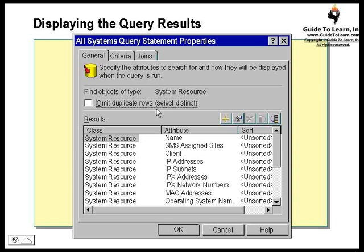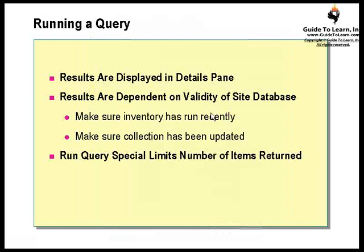To run a query, simply right-click on it and select Run Query. All results are displayed in the details pane and are independent of the validity of the site database. Make sure the inventory has run recently. If you don't get what you're expecting, make sure hardware inventory and software inventory have already been applied — otherwise you won't get the result on time. Also make sure the collection has already been updated.